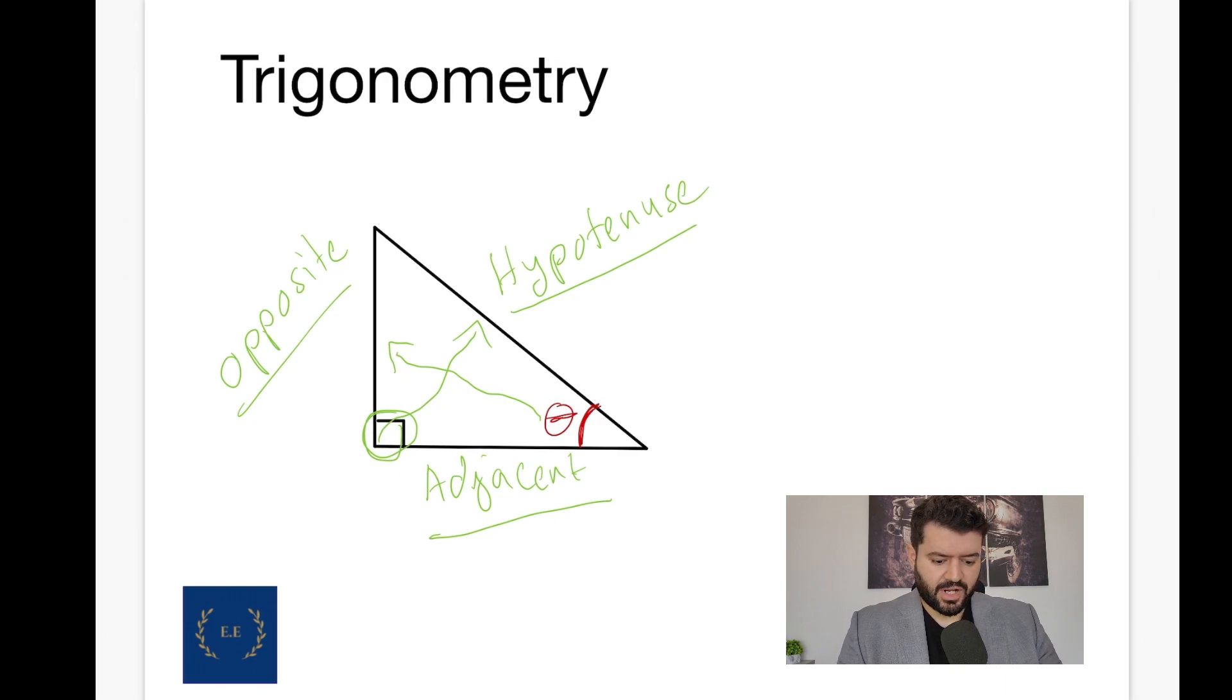So, we've established that whenever we have a right angle triangle, the side in front of the 90 degree angle is hypotenuse. In front of the theta is the opposite. And the one which is left by itself is the adjacent.